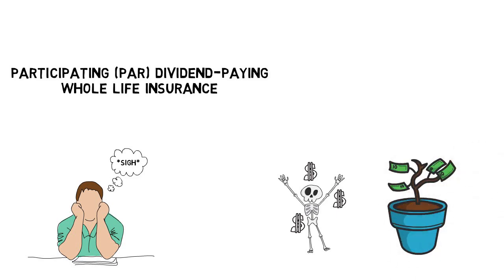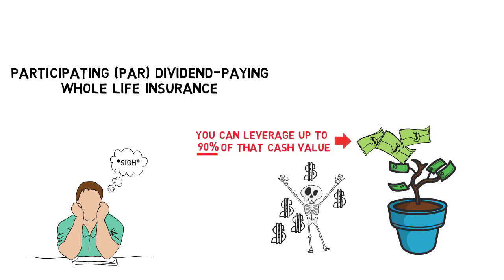So when you pay into your par whole life policy, you increase the cash value and its death benefit. The kicker, of course, is that you can leverage up to 90% of that cash value.